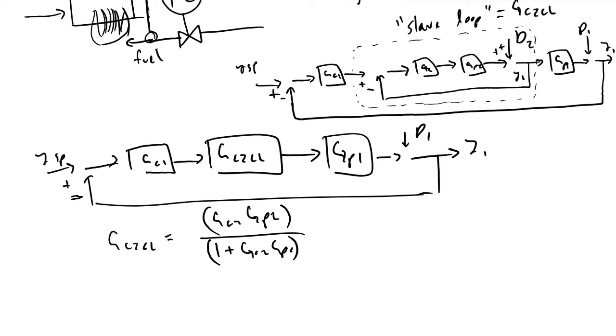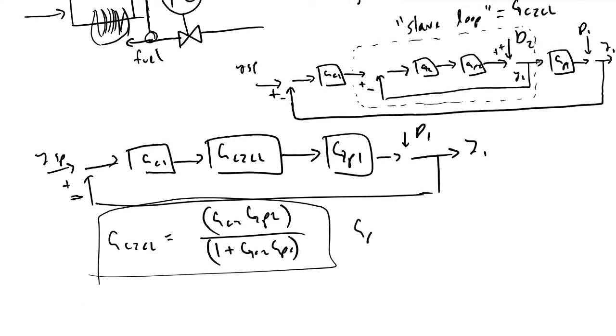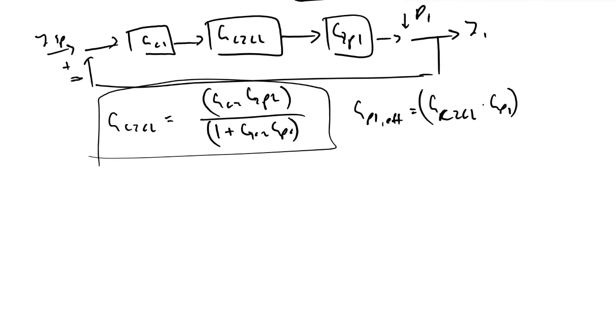We have defined what gc2 is. Another thing they do in the textbooks commonly is they'll define something called gp1 effective, and they will let this be equal to gc2cl times gp1, because by control block diagram algebra, anything in series you multiply together, anything in parallel we can add. So now we've defined gp1 effective.